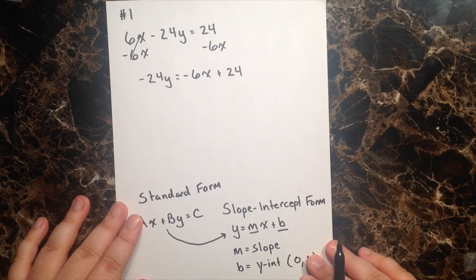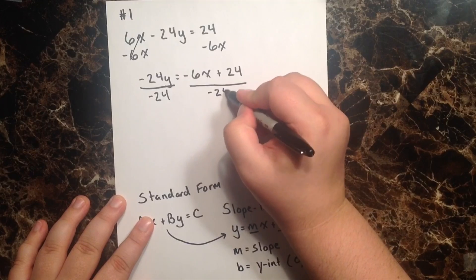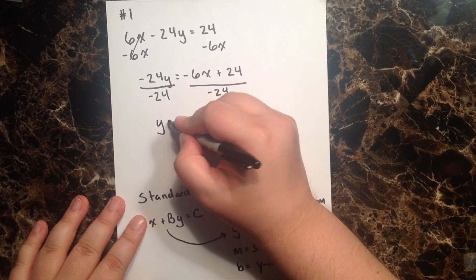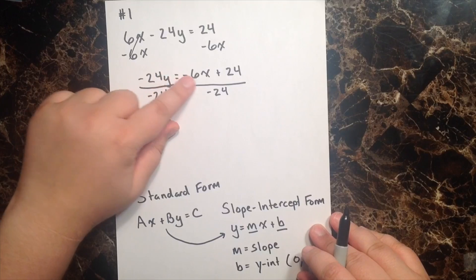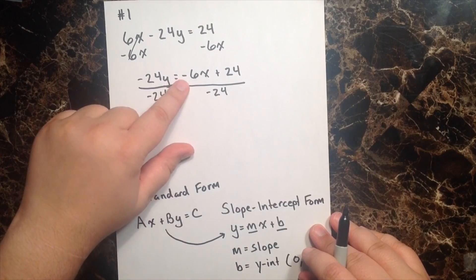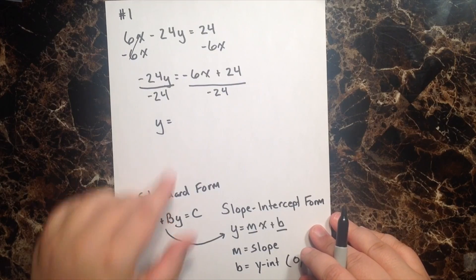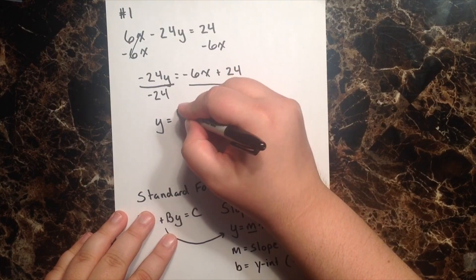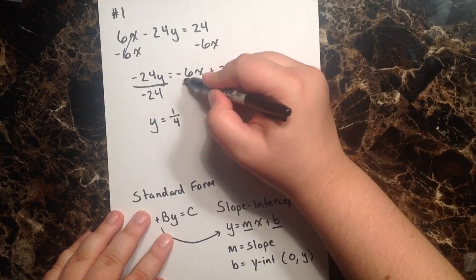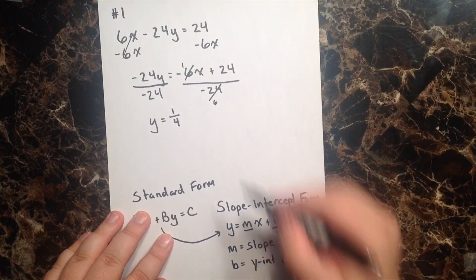And I'm left with negative 24y equals negative 6x plus 24 on the right-hand side of my equation. And if I want to isolate y, then my final step is going to be to divide by negative 24 on both sides. And that just leaves me with y equals, well, now I have a negative 6 over a negative 24. And if we remember, a negative divided by a negative is going to give me a positive. And I can reduce 6 over 24 to 1 over 4, because 6 goes into itself one time.